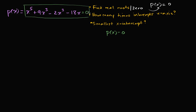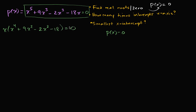The x values that make this equal to zero — if I input them into the function, I'm going to get the function equaling zero. The first thing that might jump out at you is that all of these terms are divisible by x, so I like to factor that out from the get-go. So we can rewrite this as x times x to the fourth power plus 9x squared minus 2x squared minus 18 equals zero.